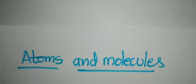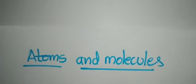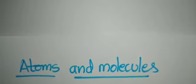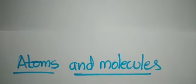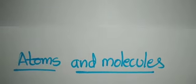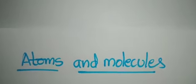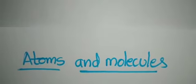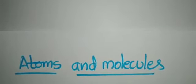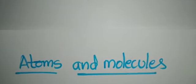Hello dear students, good morning. We are learning the chapter Atoms and Molecules, and today we are going to study about how to write a chemical formula for simple compounds. To write a chemical formula, you have to know the valency of the atoms and elements.